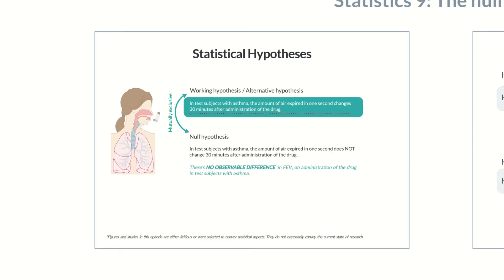Or in other words, there's no observable difference in FEV1 on administration of the drug in test subjects with asthma. Because both hypotheses can't be correct at the same time, the working hypothesis is the alternative to the null hypothesis.